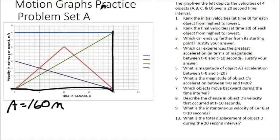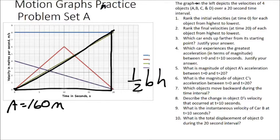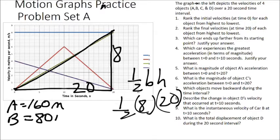Next, let's look at object B, the green line. We can take that area and make it into a triangle. The area of a triangle is one-half base times height. Our triangle has a base length of 20 seconds and a height of 8. So one-half times 8 times 20 gives us 160 times one-half. The displacement of object B during this 20-second time interval is equal to 80 meters.